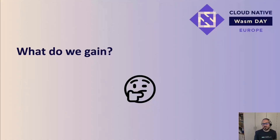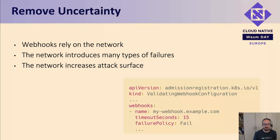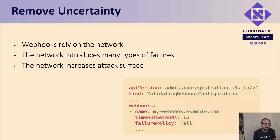Why would we do that? There are a couple of advantages. First, we get more predictable outcomes when evaluating policies. With dynamic admission controllers, the API server reaches the webhook server and waits for an answer — which could be accept, reject, mutate, or nothing: a timeout or an HTTP status code. These unplanned failures require configuring a failure policy, where setting it to 'ignore' means the request is accepted even if the webhook server didn't respond, potentially letting something dangerous into your cluster.